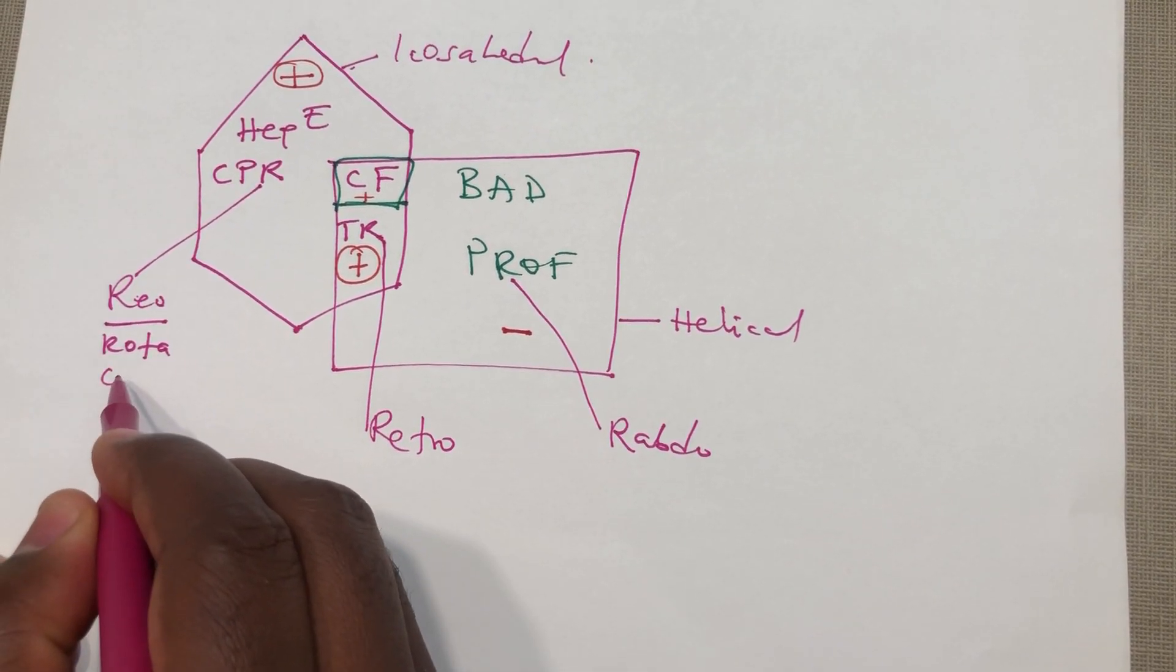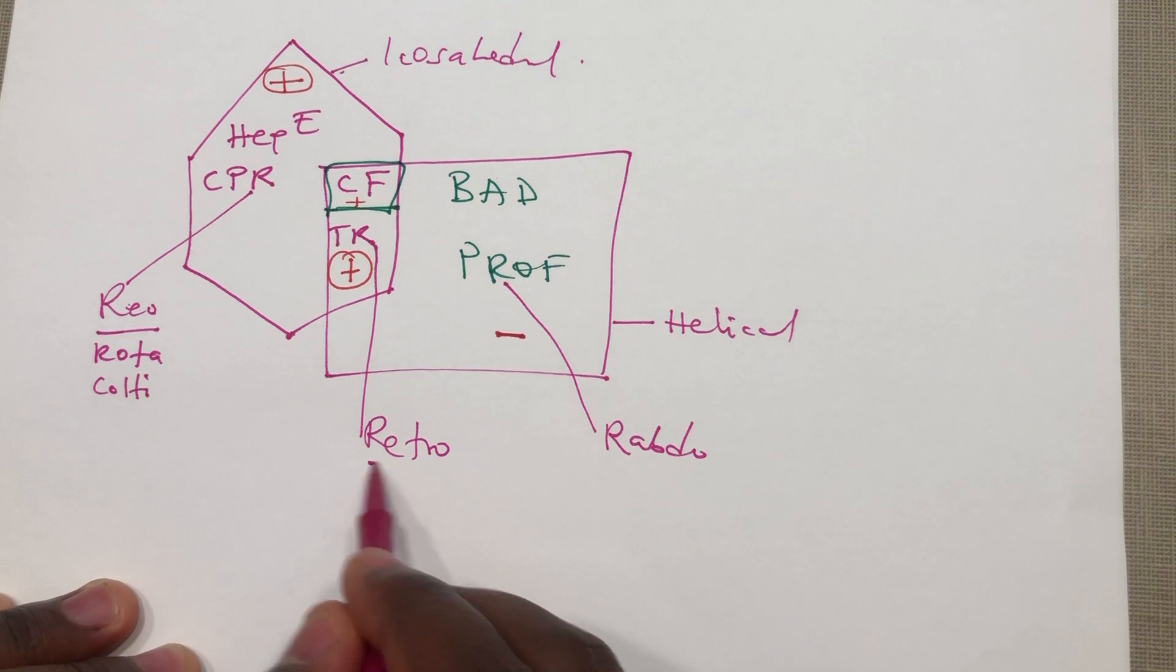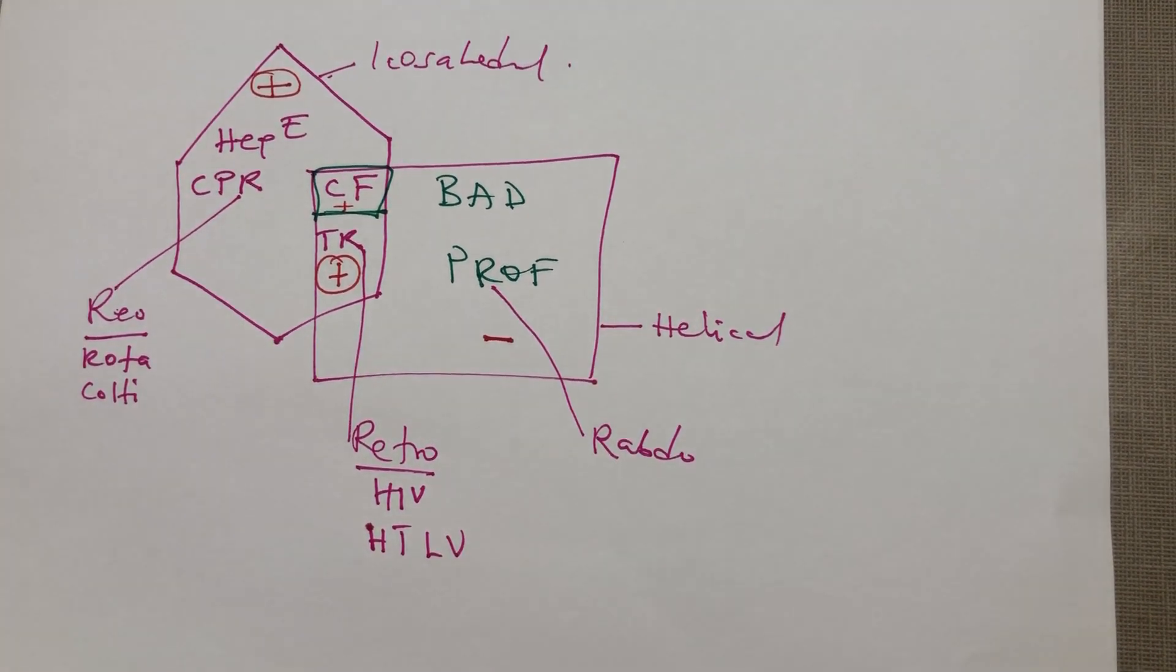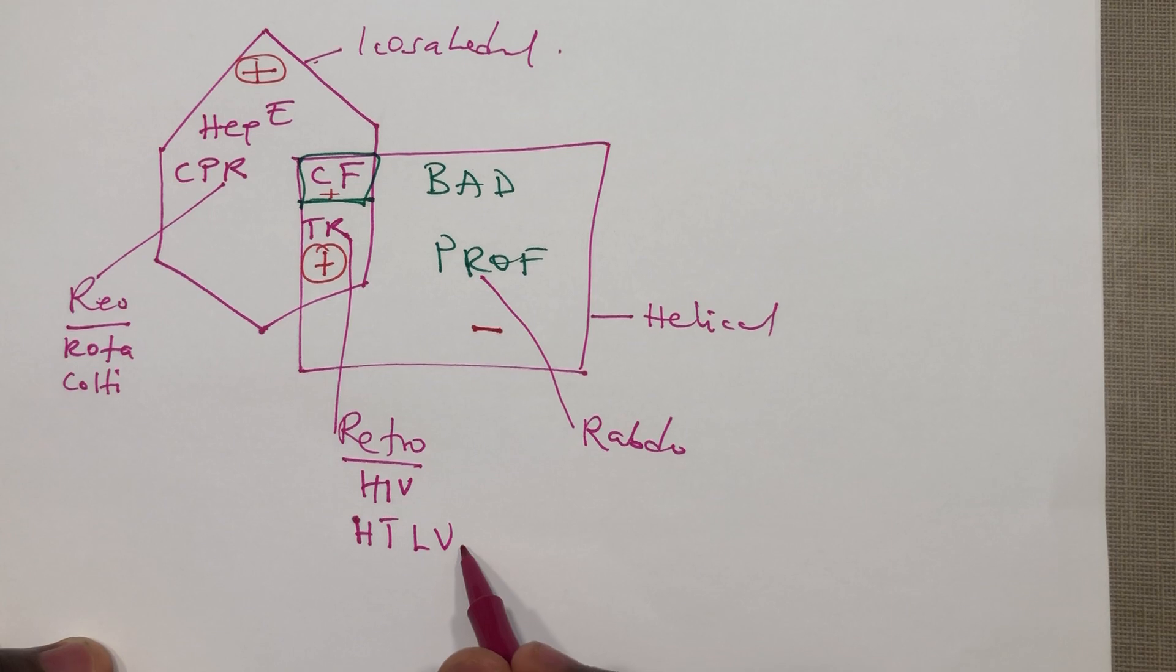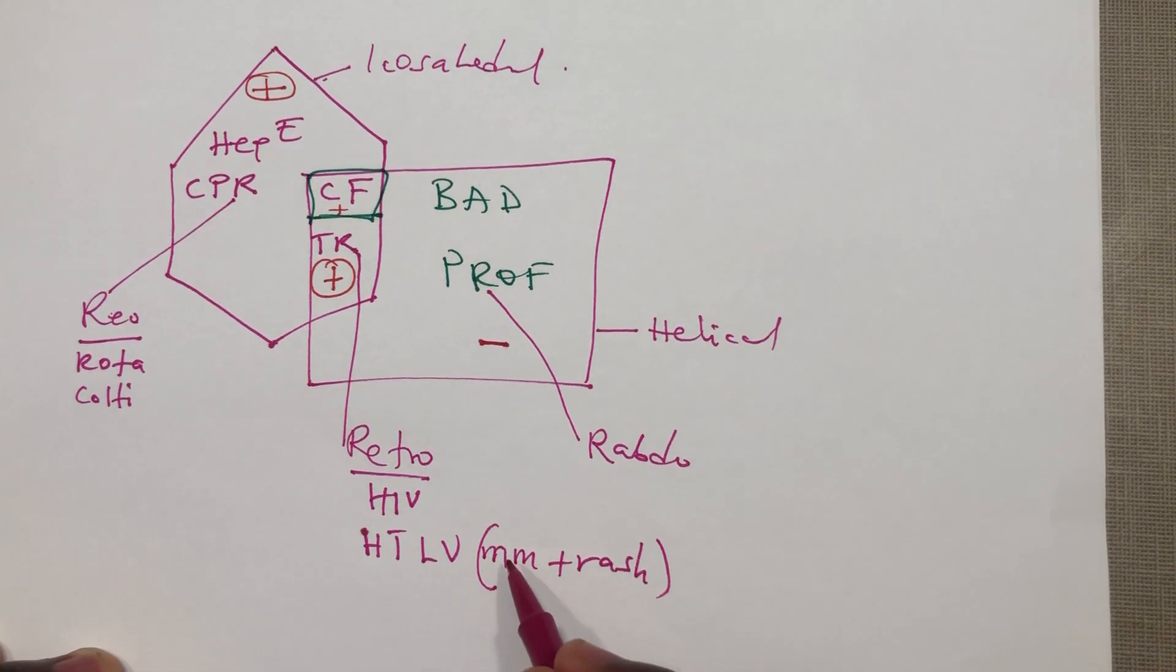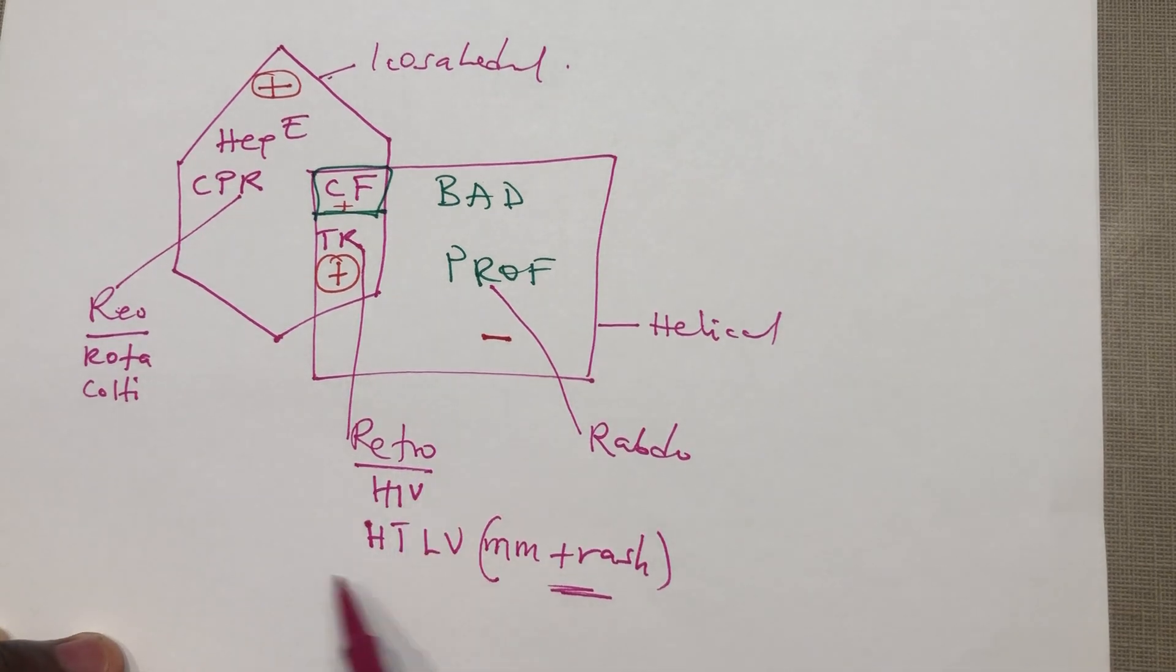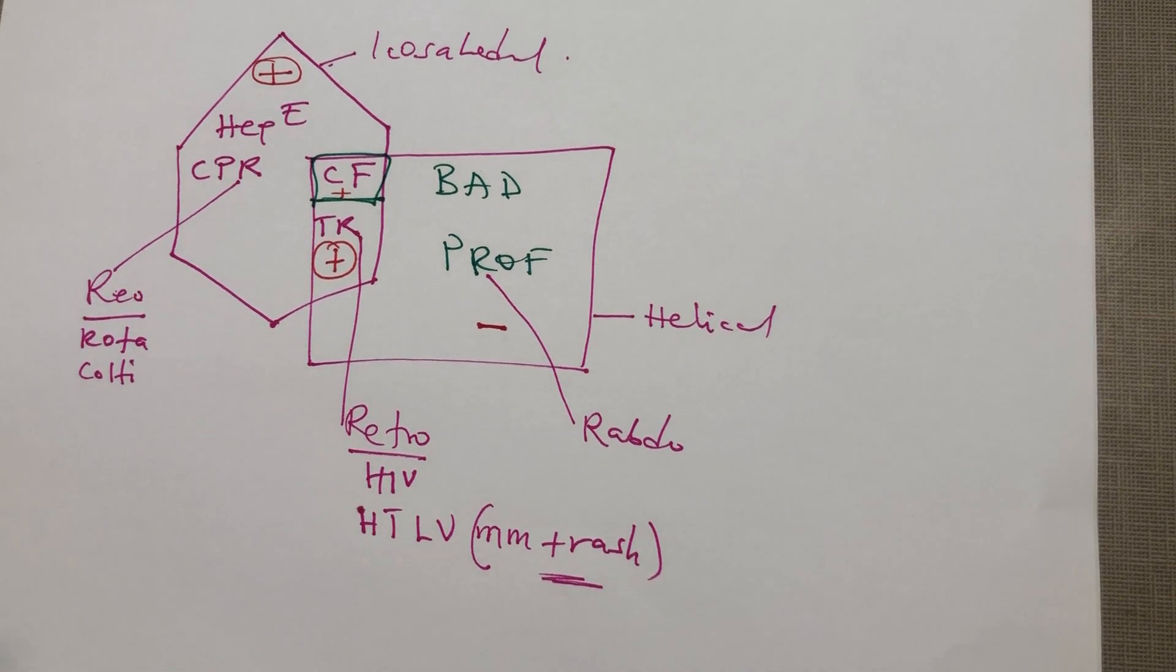For the real viruses we have the rota and the coltivirus, that's the Colorado tick virus. For the retro viruses we have HIV and the HTLV, human T-cell leukemia virus. We said something about this virus that it presents like multiple myeloma plus rash. It's a very high yield information. Because it's retrovirus, both HIV and HTLV have a reverse transcriptase ability.